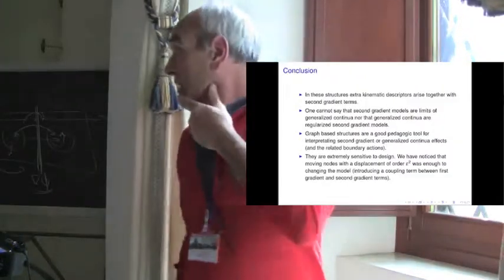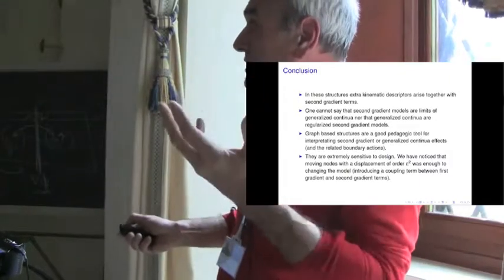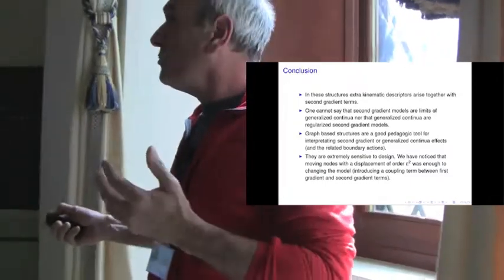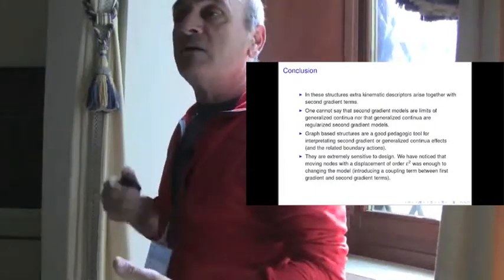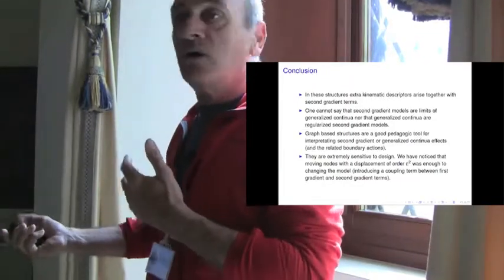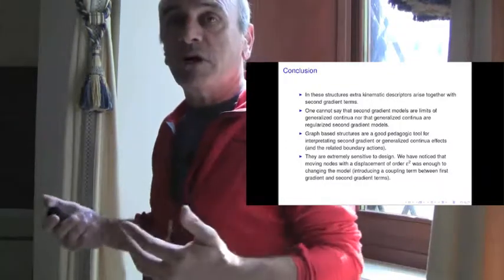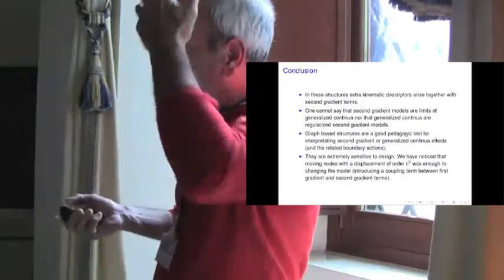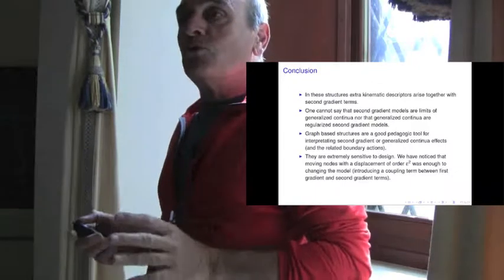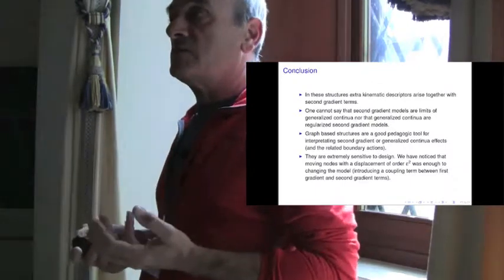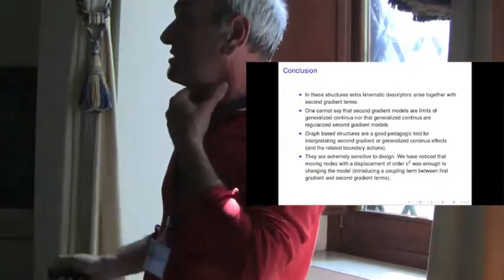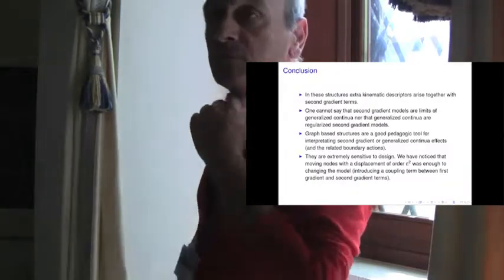So this is my conclusion. In these structures, you get generalized continua as easily as you get strain gradient materials — they come together. So, you cannot say that one is more legitimate than another, that second gradient terms are limits of generalized continua, or reciprocally that generalized continua are only regularized models of strain gradient. They come together at this order. I think that it is a good pedagogic tool to understand how these effects come by homogenization. And the last remark is that they are extremely sensitive to design.